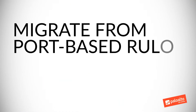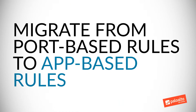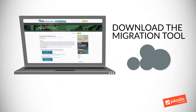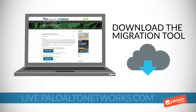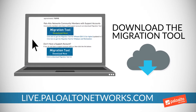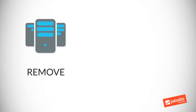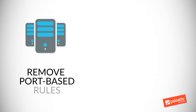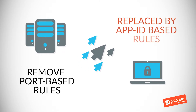Next, migrate from port-based rules to application-based rules. To ease the migration, download the migration tool from the Palo Alto Network's Live Community and follow the step-by-step instructions. This will help you to remove port-based rules, which will be replaced with AppID-based rules.